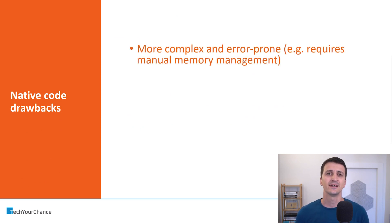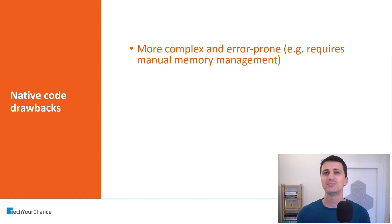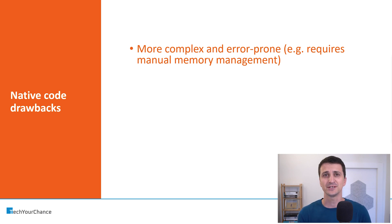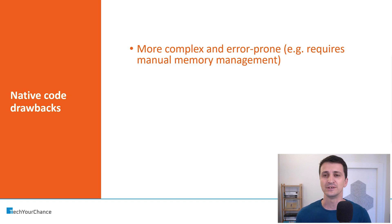The first drawback is that writing native code is much more complex and error-prone than using Java or Kotlin. Probably the biggest drawback in this context is manual memory management. When we write Java or Kotlin code executed on the Android Runtime virtual machine, we benefit from automatic garbage collection. You have nothing of this sort if you write C or C++ code compiled into native code. You manage the memory yourself, and any mistake you make will probably crash your application, and you'll have a really fun time looking for the source of those crashes.